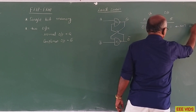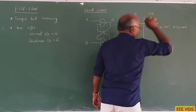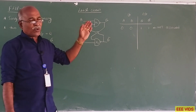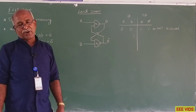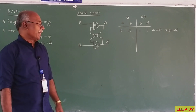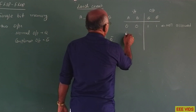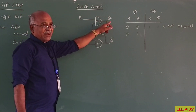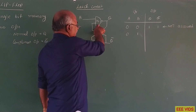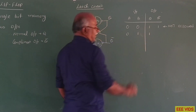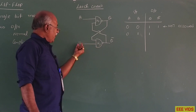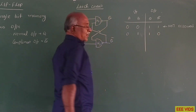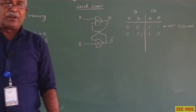When the input is A=0, B=1: for N1, A is 0, so Q is 1. For N2, B is 1 and the other input is 1, so the output is 0. Therefore Q equals 1 and Q-bar equals 0. This is the SET state of the SR latch.